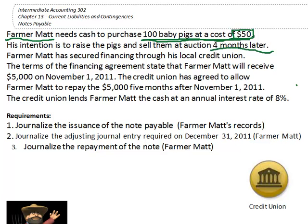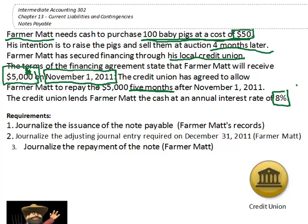So Farmer Matt goes to the local credit union and says he needs $5,000. His plan is to buy the pigs, raise them in four months, resell them at auction, and pay back the loan with a little profit. The credit union says no problem — they know him, he's been a great customer. On November 1st, the credit union gives Farmer Matt $5,000 and gives him five months to repay. They'll charge interest at 8% annually, which is an important piece of the puzzle.